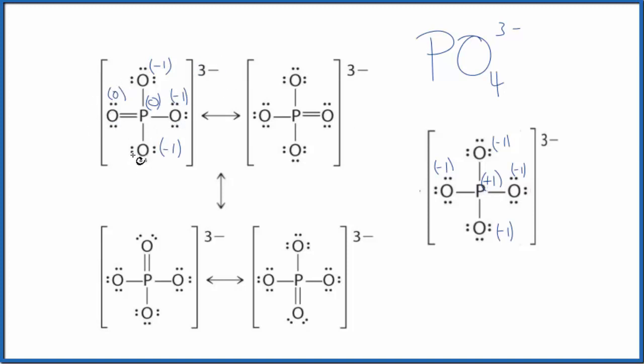When we look at formal charges, the best structure, the more favorable or likely Lewis structures are the ones that have formal charges closest to zero. So these end up being closer to zero but still matching the charge on the ion.